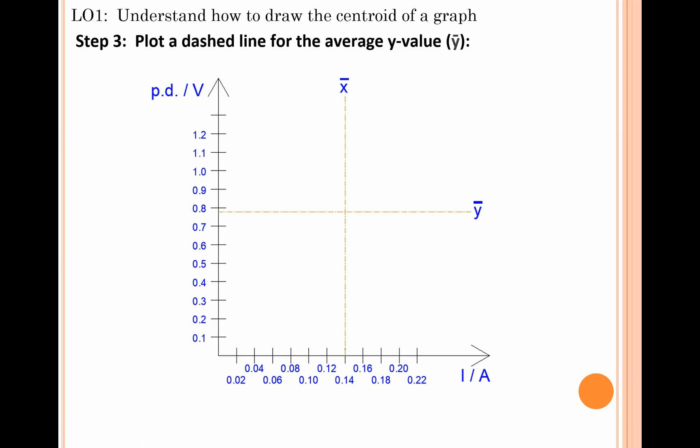The next thing we need to do is plot the value of ȳ. Go to that value on the y-axis, come across horizontally with a dashed line, and then label that ȳ. Again, the horizontal line on top denotes the average - we call this y-bar.